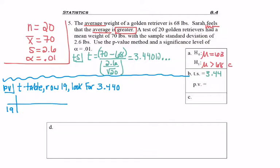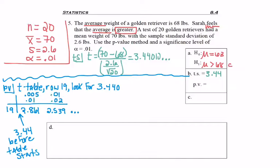So in row 19, I see 2.861, which is too small, and then the next number is 2.539, which is even smaller. So the number I'm looking for would be before the table even started.